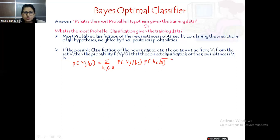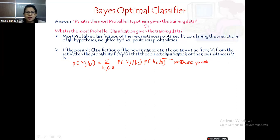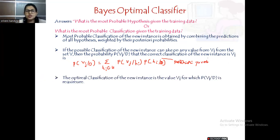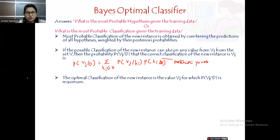P(Hi|D) is the posterior probability, and P(Vj|Hi) is the prediction of the hypothesis. Using this formula we compute P(Vj|D). The optimal classification of the new instance is the value Vj for which P(Vj|D) is maximum — that is, we apply argmax on P(Vj|D). That is the Bayes optimal classification.